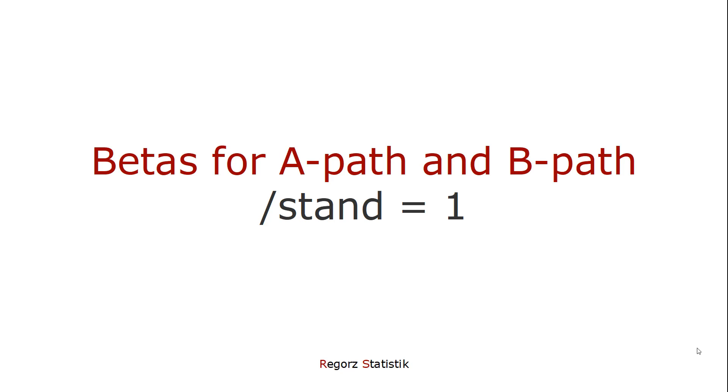For the A and for the B path, you can request betas with the stand parameter. So in most cases, if I use one of those parameters, I use the other as well.